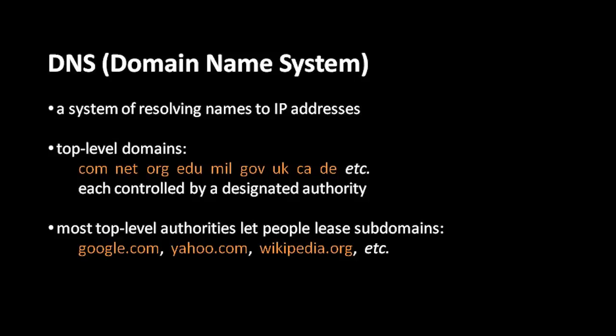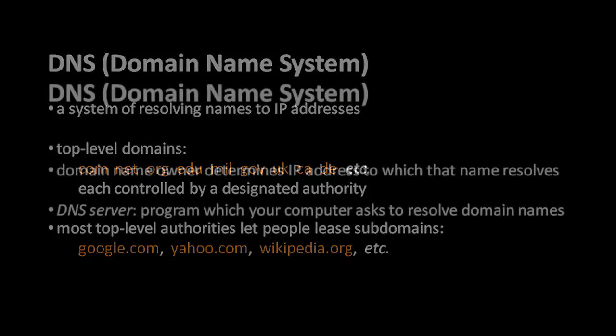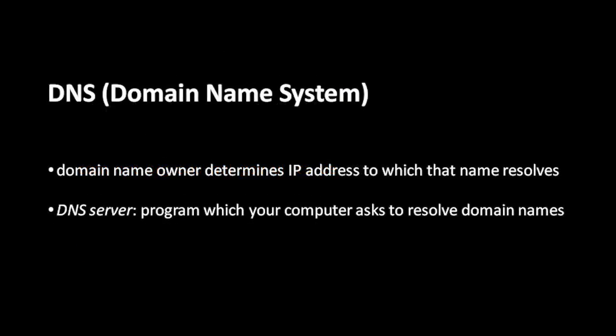Google pays money to the .com registration authority to use the name google.com. Registering subdomains is fairly cheap — you can register a name for a year for less than $20 — but you can't register a name that's already been taken. The purpose of registering a domain name is that you get to determine which IP address it resolves to. Google controls google.com and decides which IP address it resolves to — presumably the IP address of their server.